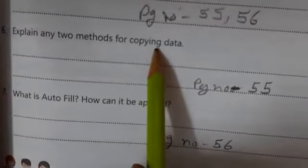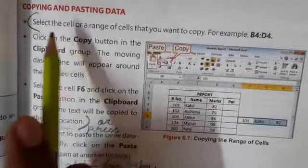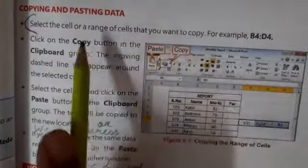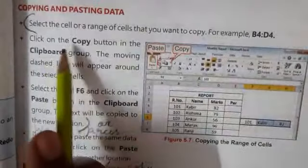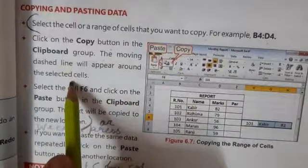Now question number six: Explain any two methods of copying data. For this, open page number 55. So you have to start from here. Select the cell or range of cells that you want to copy, for example B4 to D4. Then click on the Copy button from the Clipboard group. The moving dash line will appear around the selected cell.